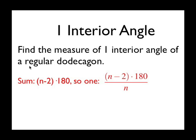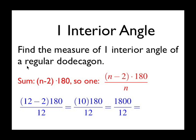A dodecagon does have 12 sides, so plugging in 12 to our formula, we get (12-2) times 180 over 12, which equals 10 times 180 over 12, or 1800. Dividing that by 12, we get 150 degrees.